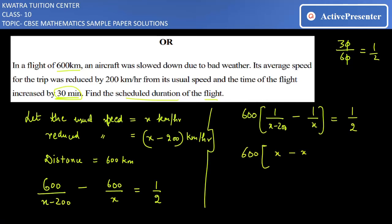The denominator is x square minus 200x. In the numerator, x minus x will cancel. If we open it, it gives x minus x plus 200. So we have 200 over x square minus 200x equals half.